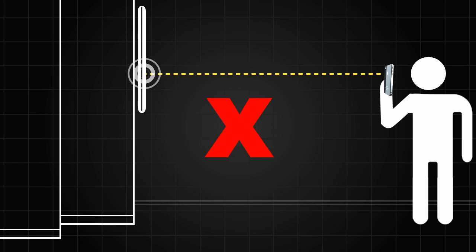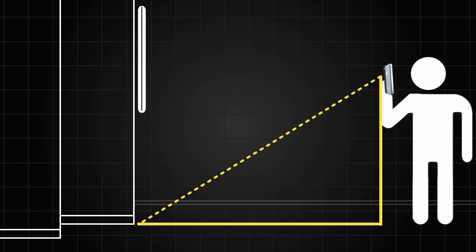If you're not measuring from the object's base, you will not produce an accurate measurement, as the app calculates the distance through simple geometry using the 90-degree angle, the phone's height, and the angle of the phone to determine the missing distance.